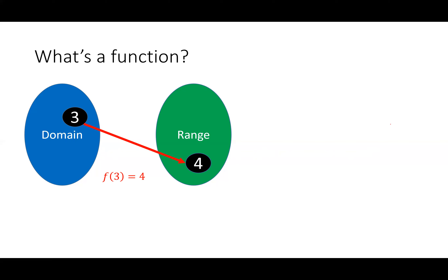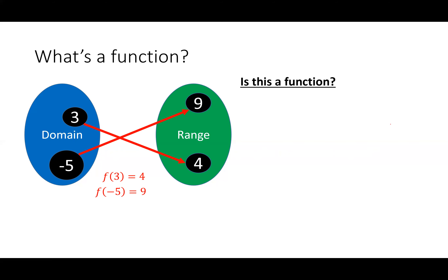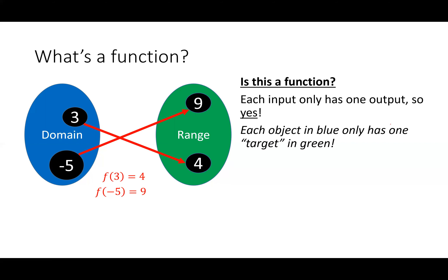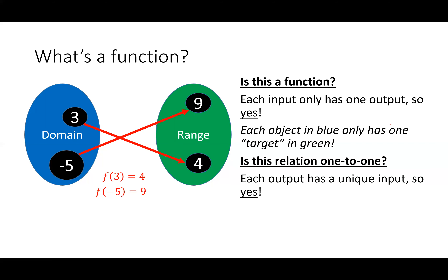We don't know if it's a function yet, so we call it a relation. We'll take negative 5 and send it to 9. Is this a function? Yes — each input has at most one output, so all is well. Think of it like each object in blue has only one target in green. Is this relation one-to-one? Each output has a unique input, so yes — each object in green gets targeted only once.